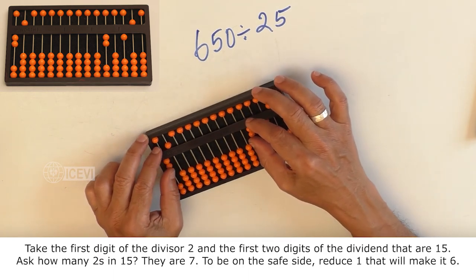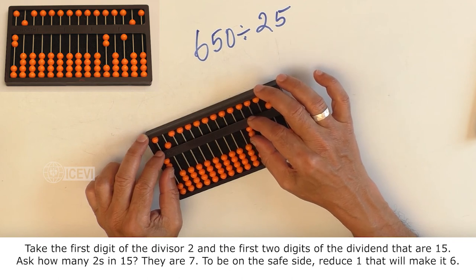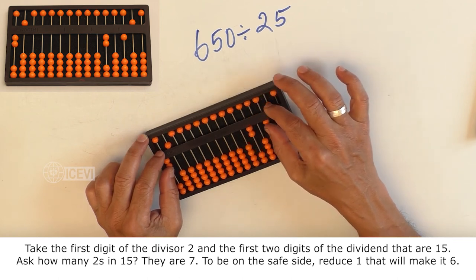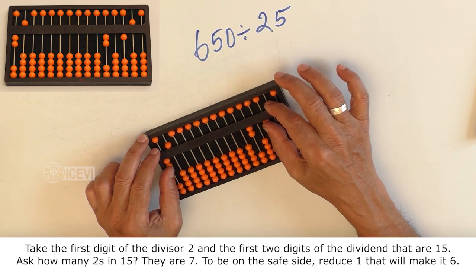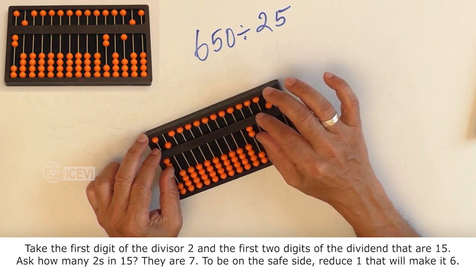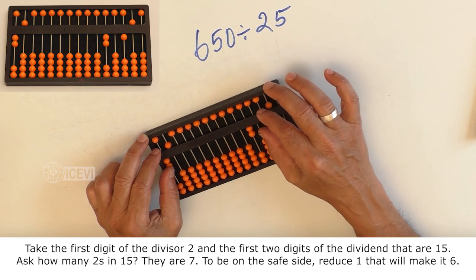Take the first digit of the divisor 2 and the first 2 digits of the dividend that are 15. Ask how many 2's in 15. They are 7. To be on the safe side, reduce 1, that will make it 6.